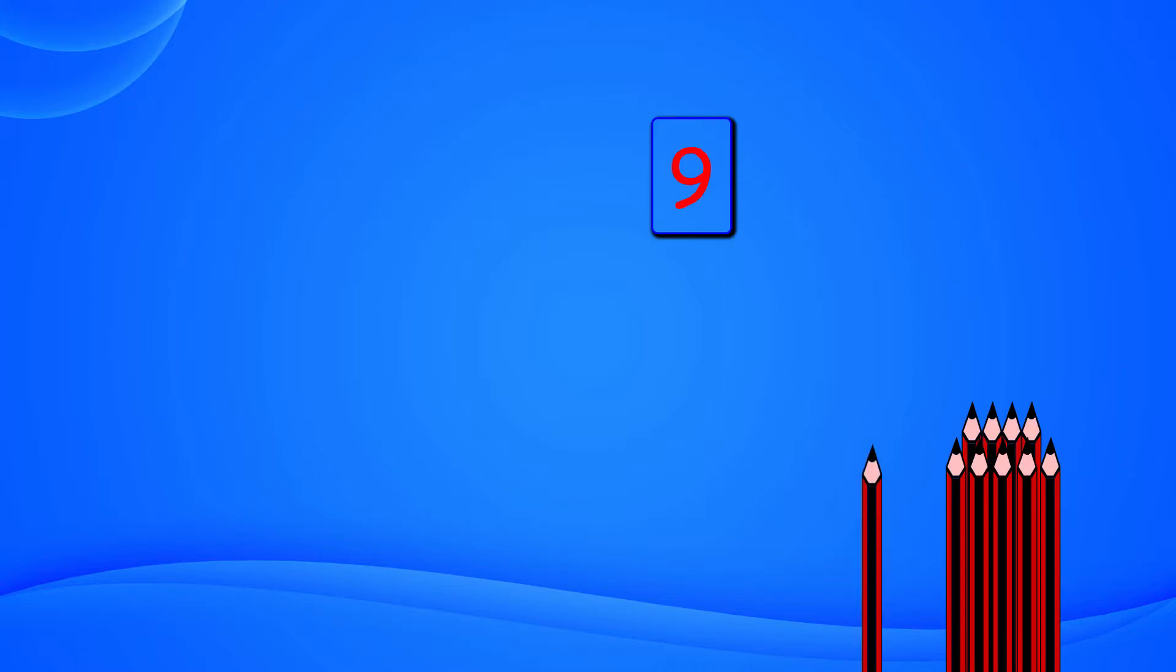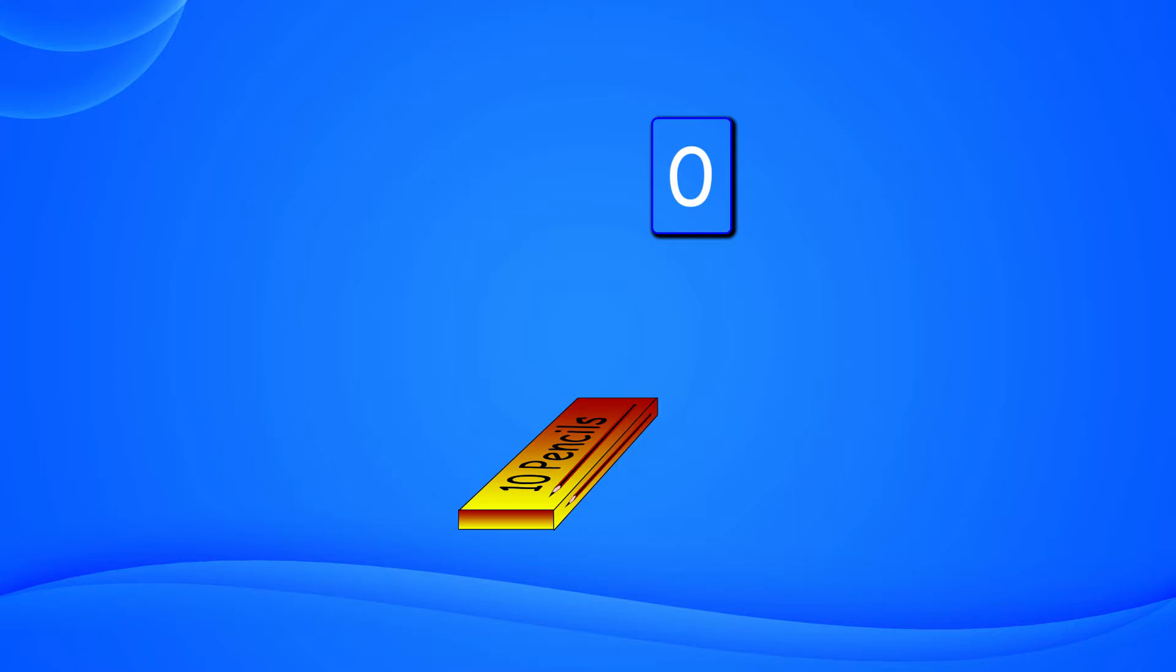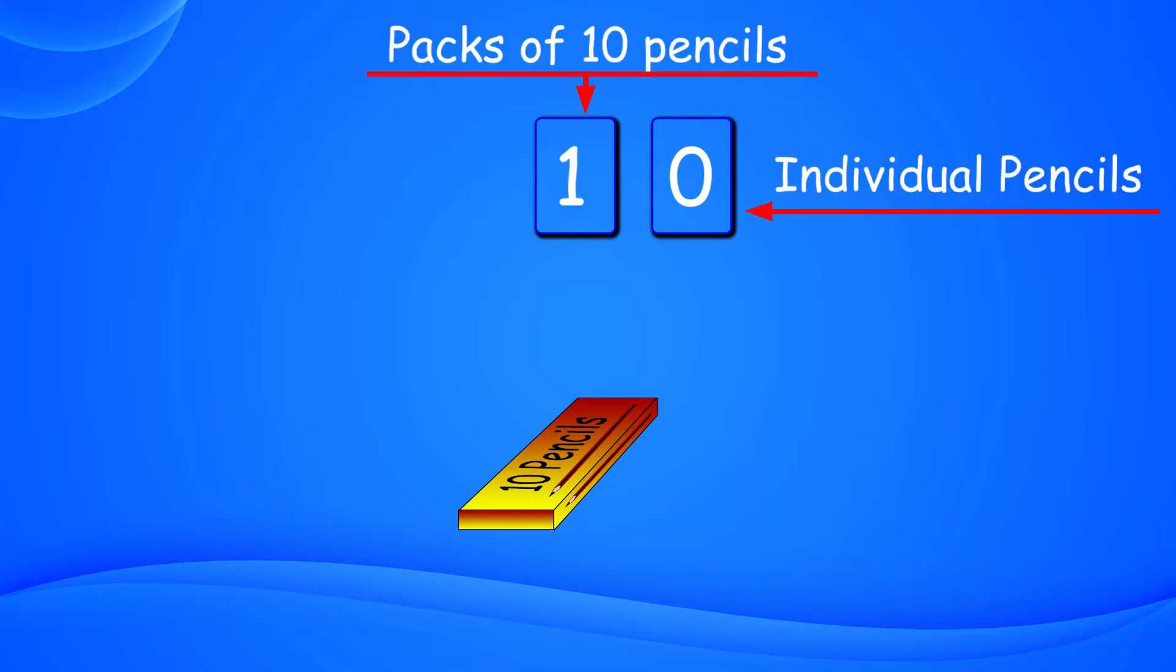One more pencil and we will have 10 pencils. How will we count now? We make a pack of these 10 pencils and create another box left to the previous number box. In this new box, we write the digit showing the number of packs of 10 pencils, and not individual pencils.